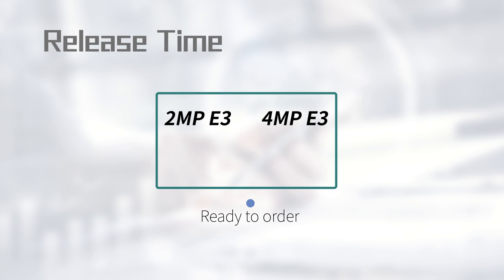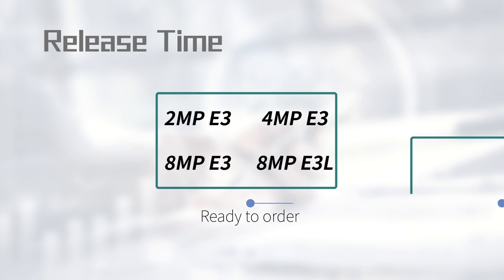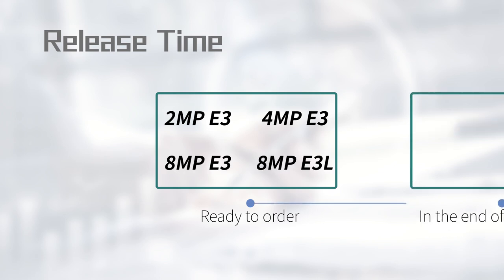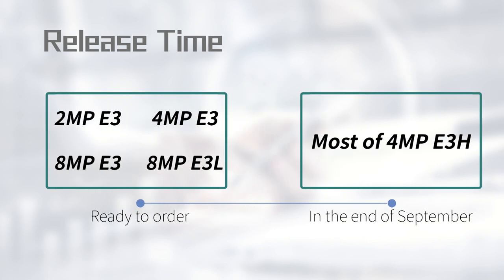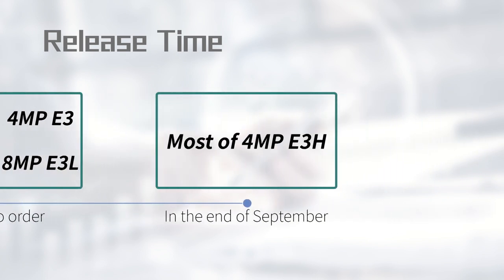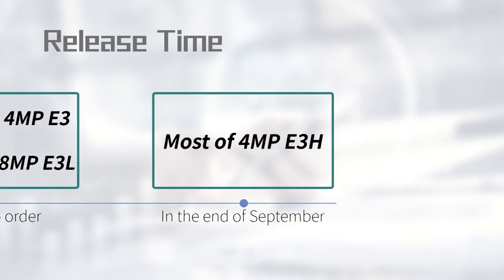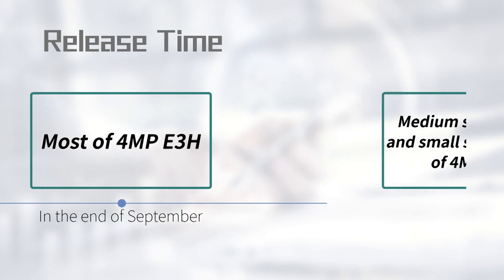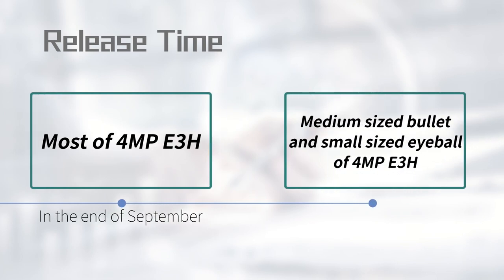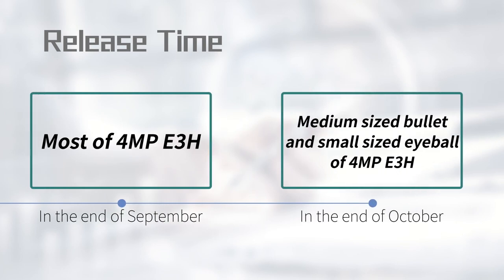2MP E3, 4MP E3, 8MP E3 and E3L are ready to order. Most 4MP E3H models will launch at the end of September, but the medium-sized bullet and small conch will be released at the end of October.